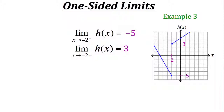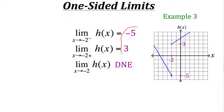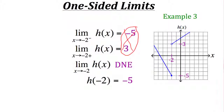Since the two one-sided limits are different — negative 5 from the left and positive 3 from the right — the overall limit as x approaches negative 2 does not exist, because both one-sided limits would need to be the same for a limit to exist. When we evaluate the function at x equals negative 2, the output is negative 5, indicated by a closed circle at that point.